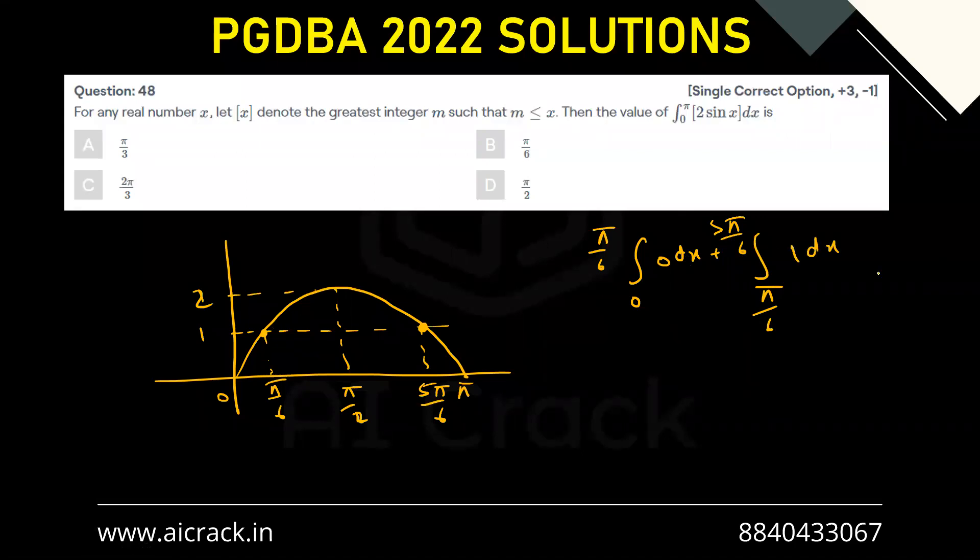Similarly, from 5π by 6 to π, this value would be zero because the function value is lying between zero to 1, so GIF would be zero dx. So this is zero, this is zero.